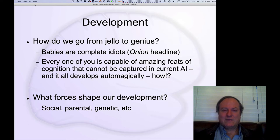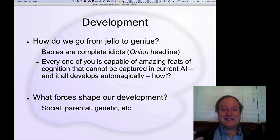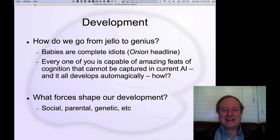A thousand or ten thousand years ago, your abilities are just amazing — even if you're average relative to your peers. Even with all the advances in AI we're seeing, there are still so many things that any average person can do that way outpace what AI can do. And yet we all start out essentially as idiots. There's this great Onion headline that says babies are complete idiots and outlines all the ways in which babies really can't do much.